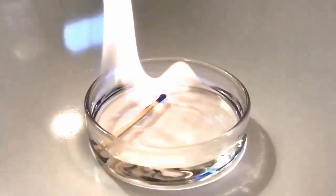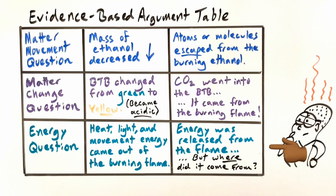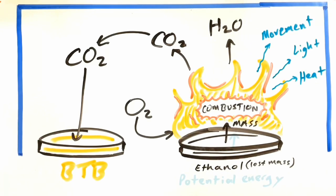And we saw that when we burned the ethanol, energy was released in the form of heat, light, and movement. These observations led us to conclude that carbon dioxide and water came out of the burning flame during the reaction, and in addition, the ethanol and oxygen were pulled up into the flame.